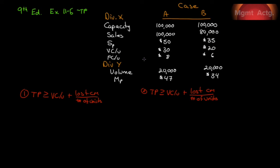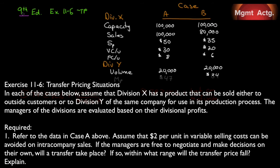Moving on to Exercise 11.6 — still the 9th edition — Transfer Pricing Situations. In each case, division X has a product that can be sold to outside customers or to division Y of the same company. Managers are evaluated on divisional profits. Division X has capacity of 100,000 units. Case A: already at full capacity (100,000 units sold), selling price $50, variable cost $30, fixed cost $8; division Y wants 20,000 units and is currently paying $47. Case B: spare capacity of 20,000 units — exactly what division Y wants.